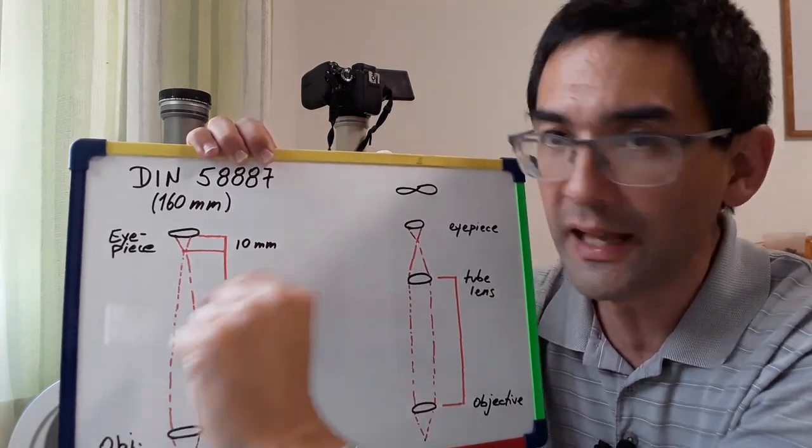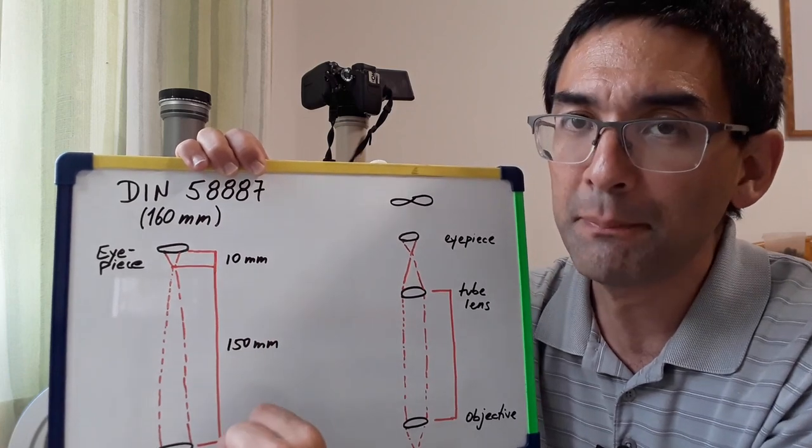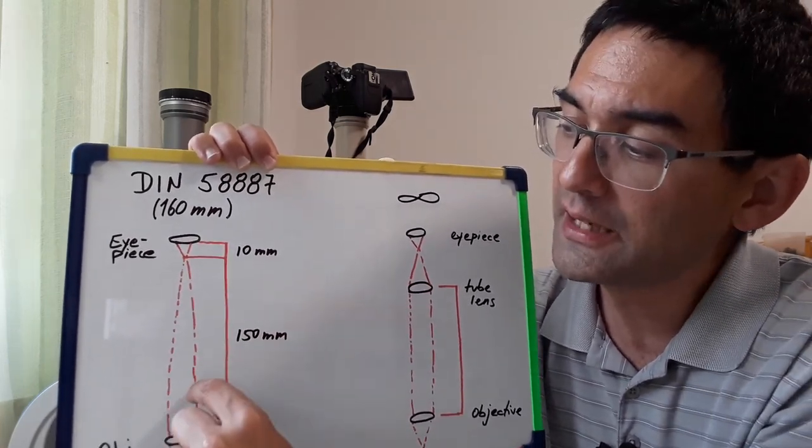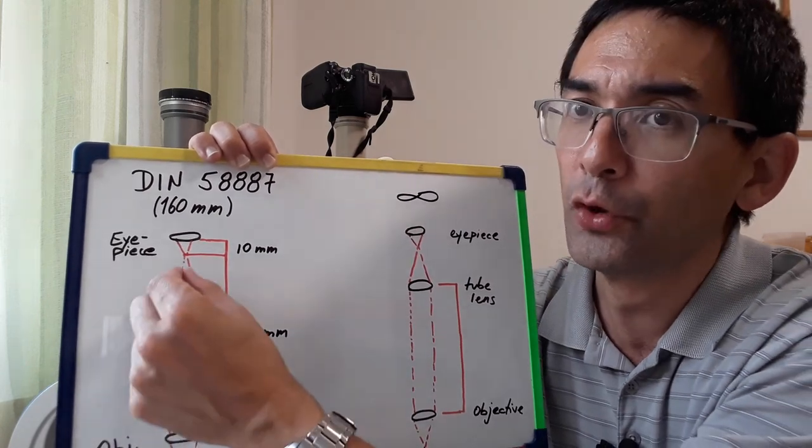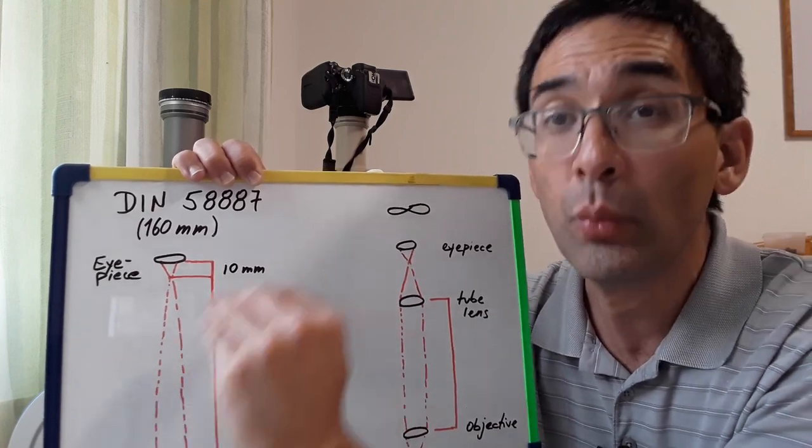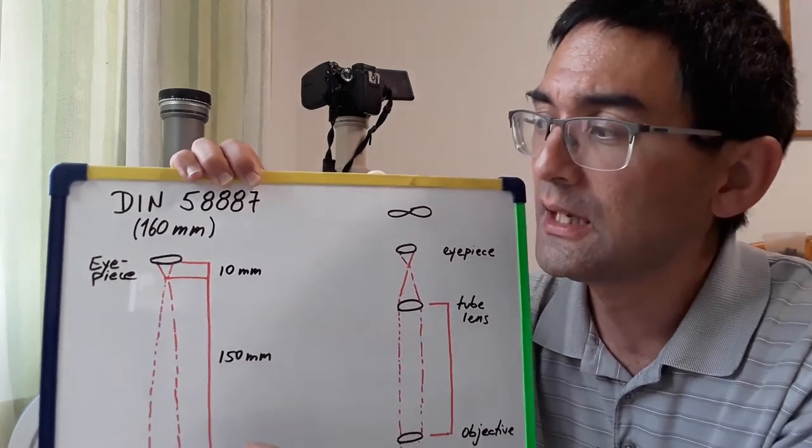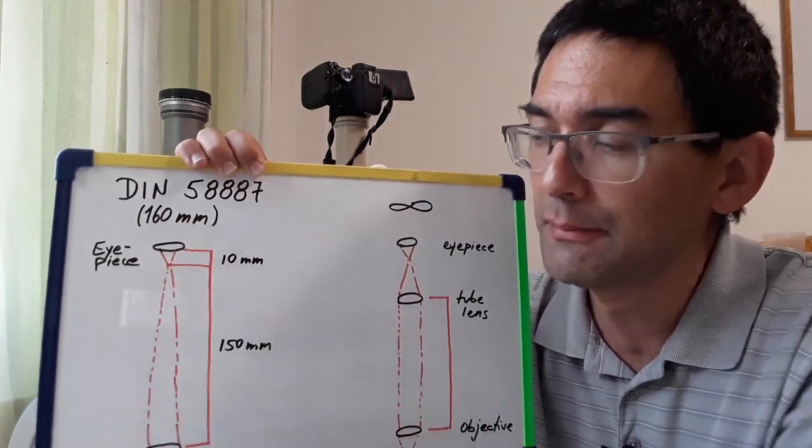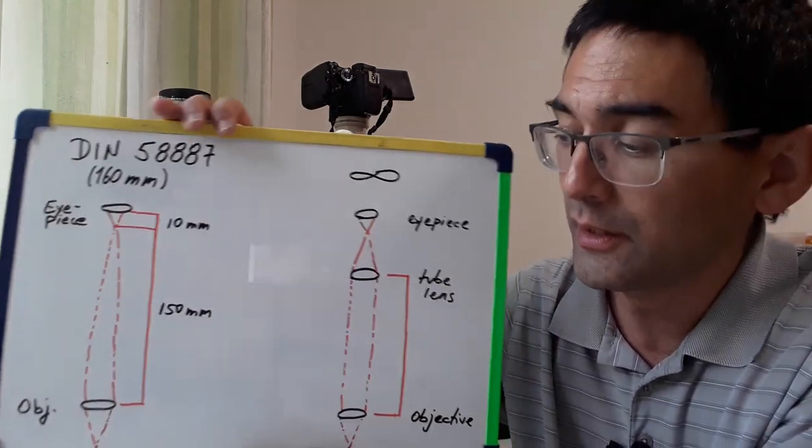But also if you now put a filter in here which is a piece of glass so to say, then what happens is that it also changes the focus a little bit because these light beams here they are not parallel but they converge together. So two disadvantages: you cannot put any filters in there without changing the focus and the second thing is that the size of the microscope is fixed and limited.